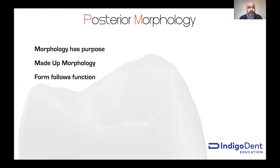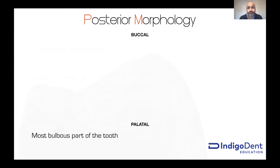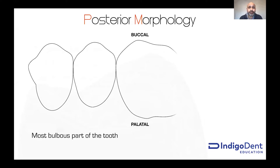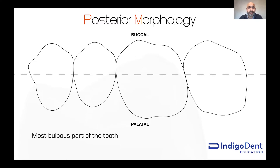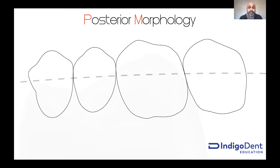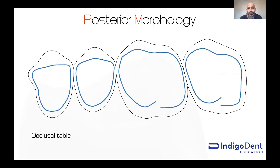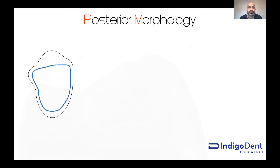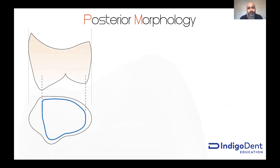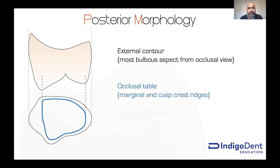It's our job to replicate that. If you look at the uppers on a four, five, six, and seven and draw the outline form in a straight line, that doesn't really replicate what we see in the mouth — there's a curvature to the arch. You can see the teeth go slightly askew and the contact points are a little more buccal at the center of the tooth. When we place the outline form and then the occlusal table within that, you can see a discrepancy. The outline form is the most bulbous part of the tooth from the occlusal view, whereas the occlusal table is made up of marginal ridges and the cusp crest ridges going around the tooth.